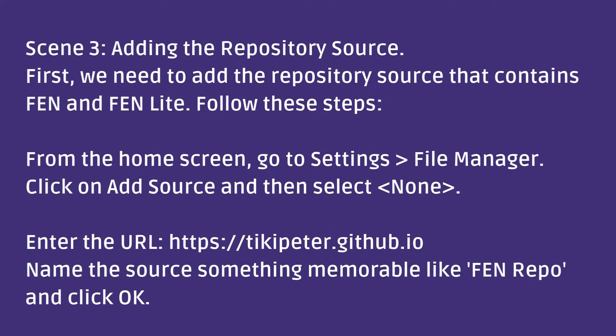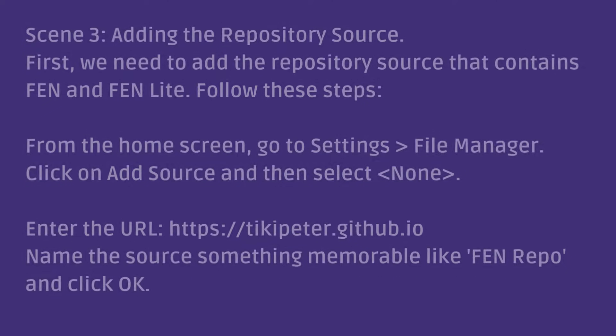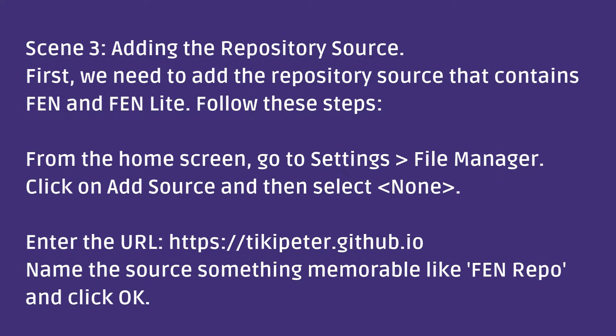First, we need to add the repository source that contains Fenn and Fenn Lite. Follow these steps: from the home screen go to Settings > File Manager, click on Add Source and then select the None option. Enter the URL: https://ticketpeter.github.io. Name the source something memorable like Fenn Repo and click OK.